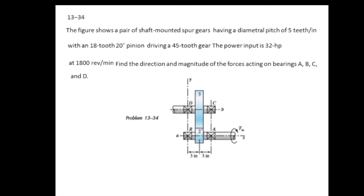To find the bearing reactions, we first find the forces on the gears, then those forces are transmitted to the shafts, and the bearings provide the reactions. If gear two is rotating in a given direction, the tangential force exerted by gear three on gear two will be out of the page, along the z-axis. The radial force exerted by gear three on gear two acts in the y-direction. Similarly, the tangential and radial components of force on gear three act along the z and y axes respectively.